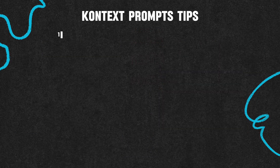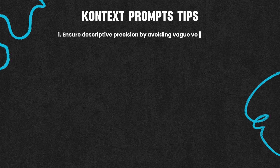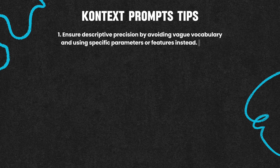Tip 1: Ensure descriptive precision by avoiding vague vocabulary and using specific parameters or features instead. For example, use "the woman with short black hair" rather than "she".